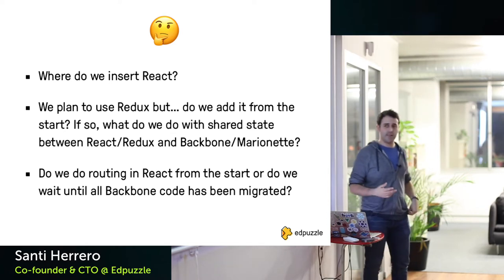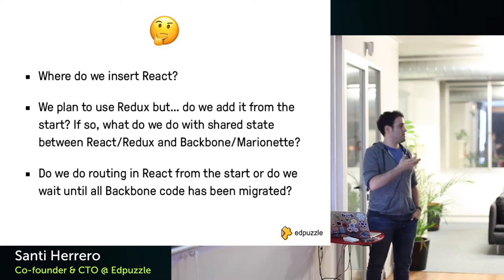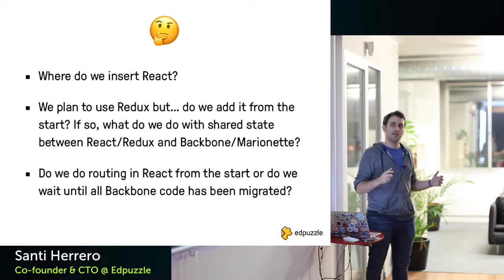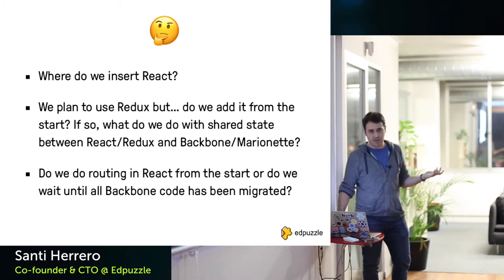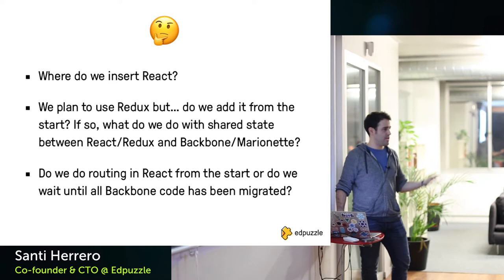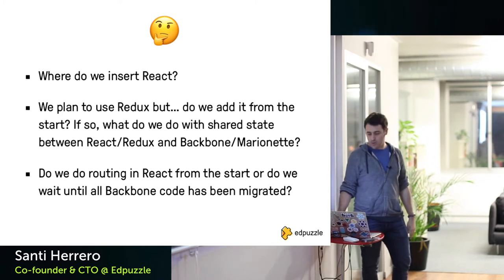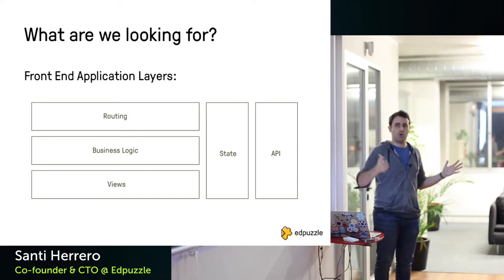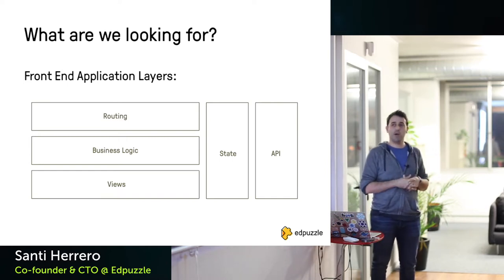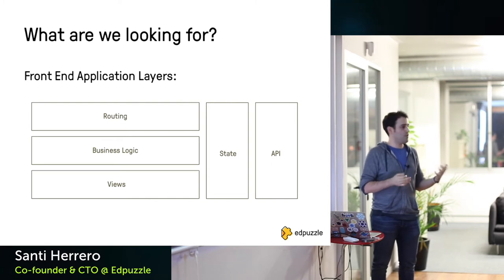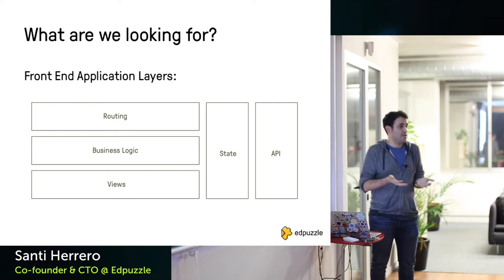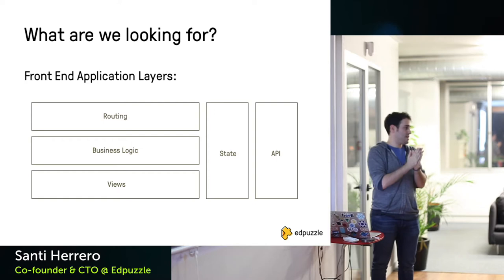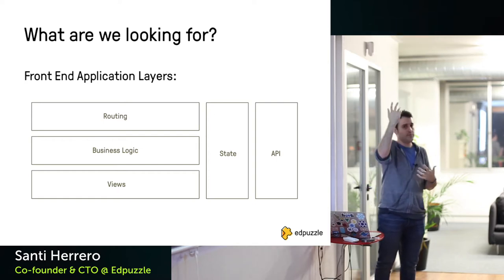Routing is another question: do we add React Router from the start, or still rely on the Backbone router and redo the routing layer at the very end? But before answering these questions, we need to analyze our architecture. In a front-end app you have these five conceptual blocks: the routing layer, business logic, the view layer, state, and API connection. In Backbone, state and API are often together because models and collections both store state and communicate with the API.